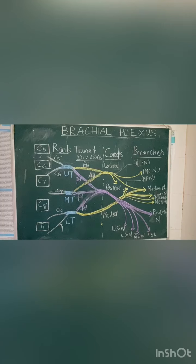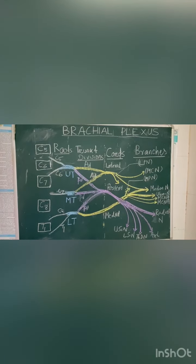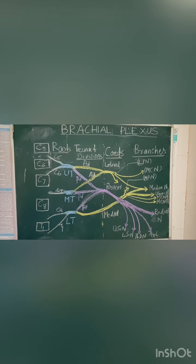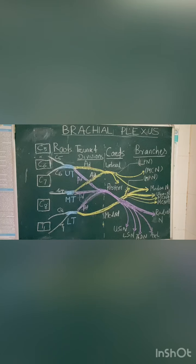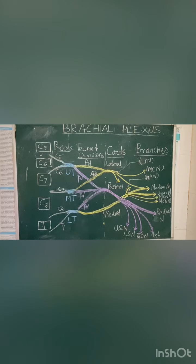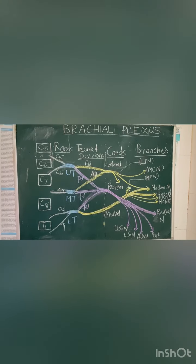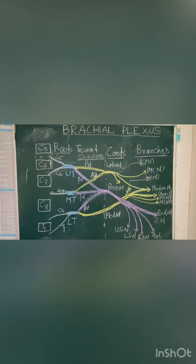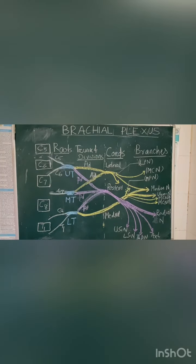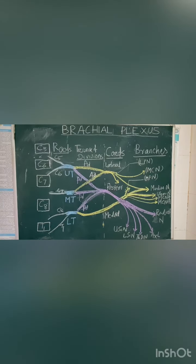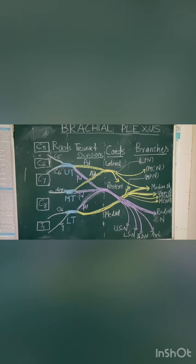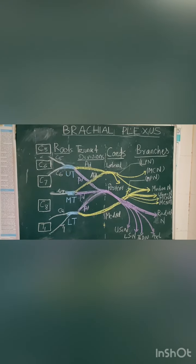Now we are going to the part of the brachial plexus below the clavicle. You can see a dashed line in the middle. To the left are the supraclavicular parts — the roots, trunks, and divisions. The anterior division of the upper trunk and the middle trunk unite to form the lateral cord. The anterior division of the lower trunk continues as the medial cord, and all three posterior divisions unite to form the posterior cord. The cords and branches are the infraclavicular part.